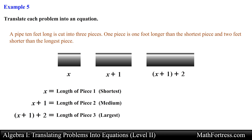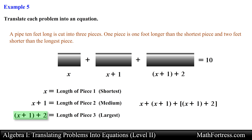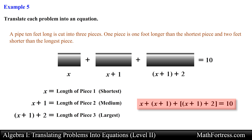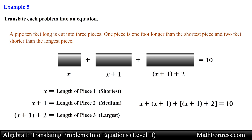Having assigned variables to all three unknowns, we are ready to translate the word problem into an equation. From the first sentence the original pipe length was 10 feet, so the individual pieces must add up to 10. Our final equation is: x plus (x plus 1) plus (x plus 1 plus 2) equals 10. Make sure you read the word problem as many times as you need to — you really need to understand the problem before identifying unknowns and assigning variables. In our next video we will expand the skills developed so far and start solving word problems over a given domain.